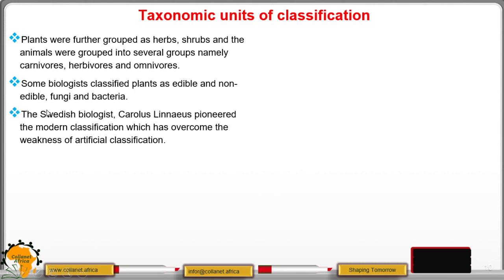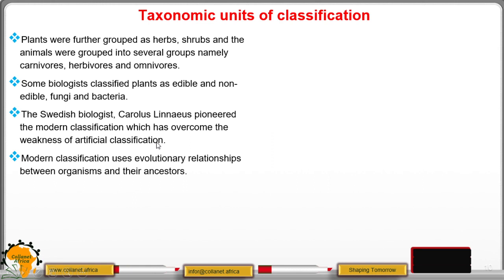Then came the Swedish biologist Carl Linnaeus, who pioneered the modern classification, which overcame the weaknesses of artificial classification. In modern classification, it uses the evolutionary relationship between organisms and their ancestors.